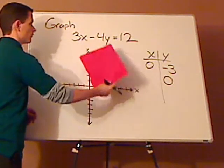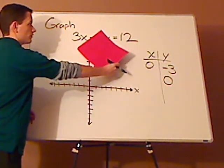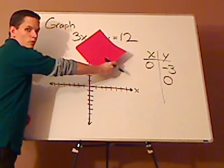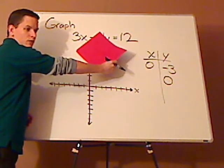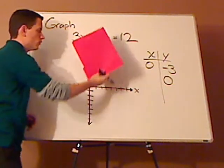Now, if I plug in zero for y, look at that. I have 3x equals 12. What does x have to be when y equals zero? Right, it has to be 4.